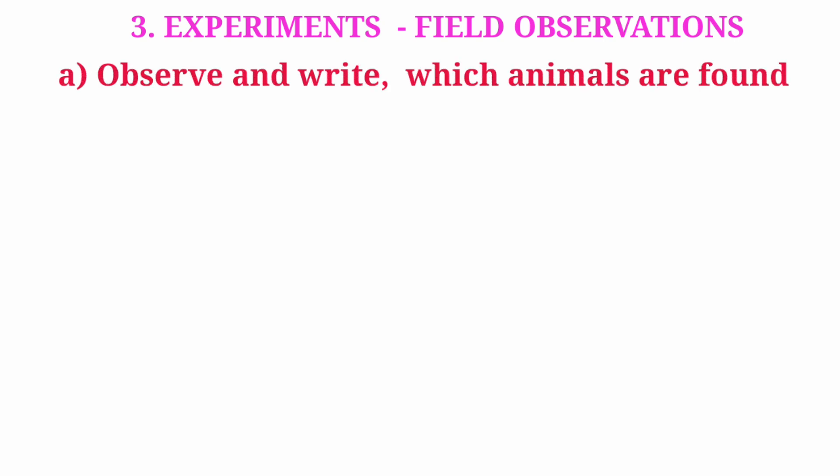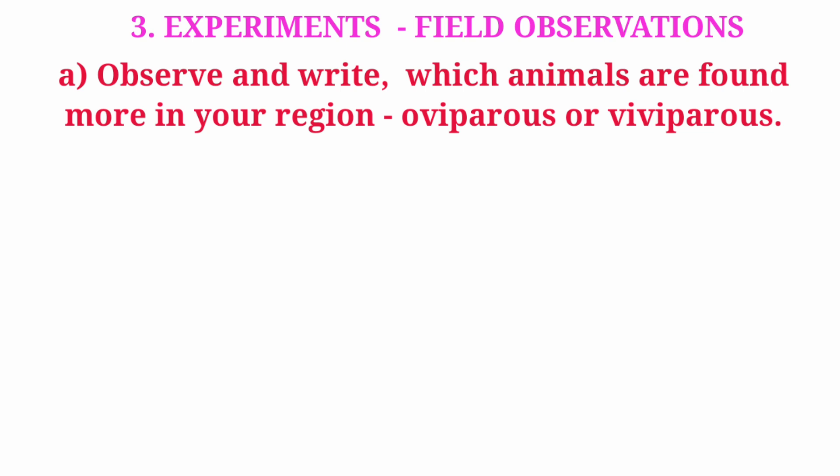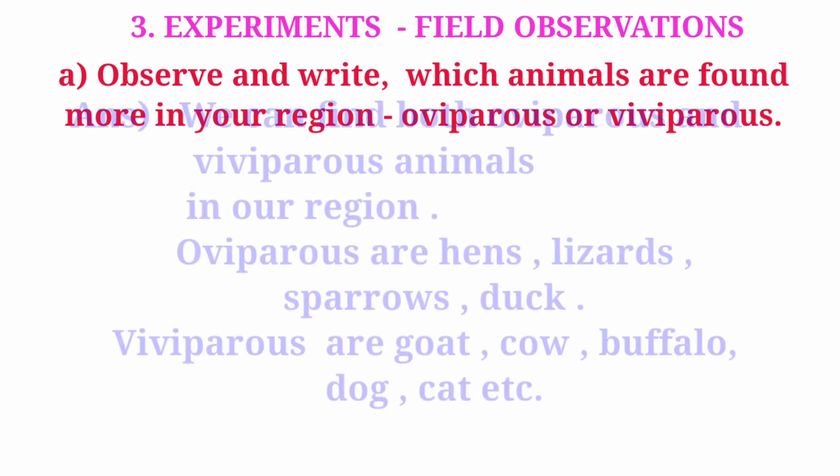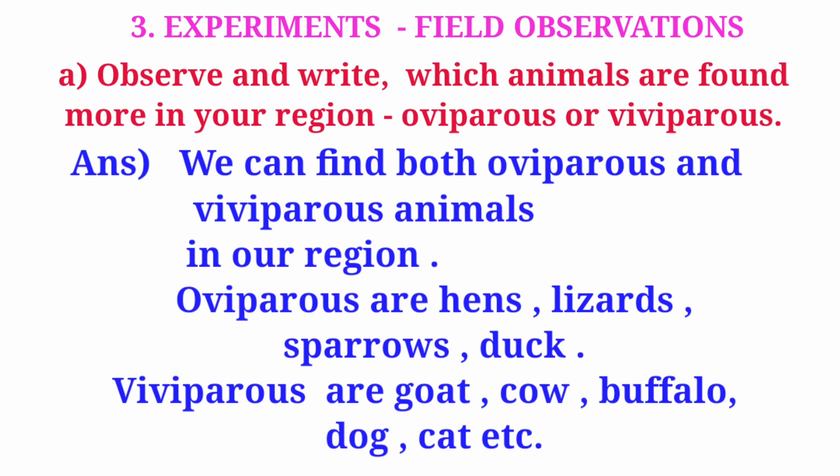Experiments. Field observations. Question A: Observe and write. Which animals are found more in your region — oviparous or viviparous? Answer: We can find both oviparous and viviparous animals in our region. Oviparous are hens, lizards, sparrows, duck. Viviparous are goat, cow, buffalo, dog, cat, etc.